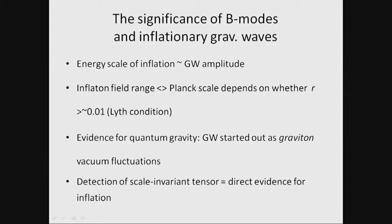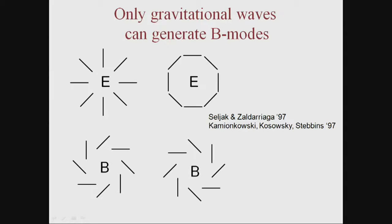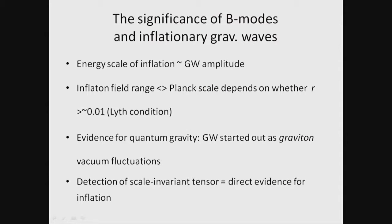If you see a scale-invariant tensor, you're measuring the Hubble scale during inflation. The Hubble scale, or the energy density that drives the expansion, remains constant during inflation — that's almost the definition of inflation. That's why the search for B-mode polarization is a big deal, because of all these theoretical reasons — not simply because we want to discover gravitational waves yet again.